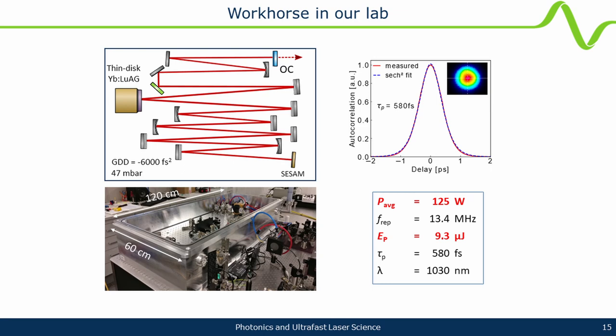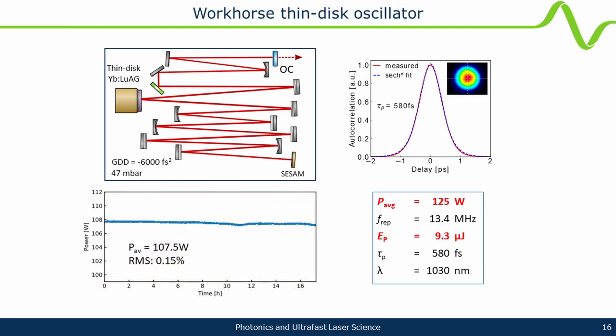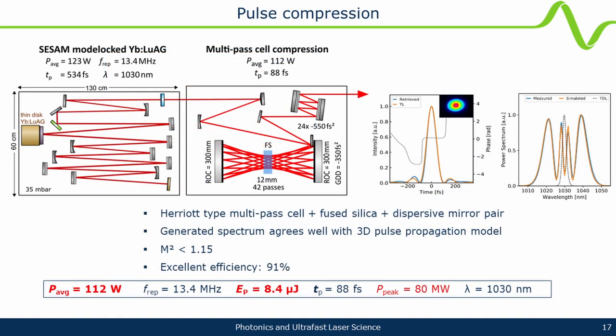The laser we built runs at 125 watts, around 10 microjoules, 13 MHz repetition rate. The pulse duration is not very short, so we had to work to shorten it. There are now techniques like multipass cell compression, where you essentially free-space broaden the spectrum and compress it back with dispersive mirrors — with around 90% efficiency. We start with 120 watts and end with 110 watts, gaining hugely in pulse duration and peak power. This has been a game changer for adopting these lasers for applications.